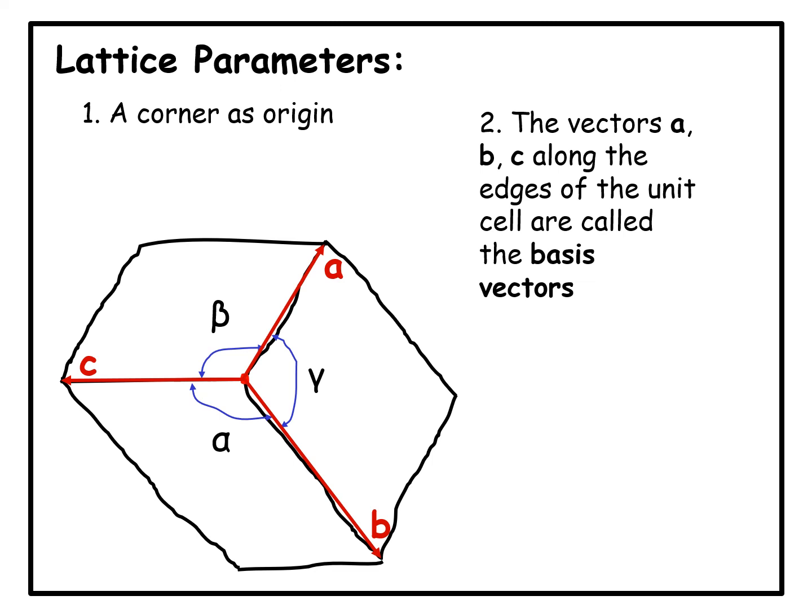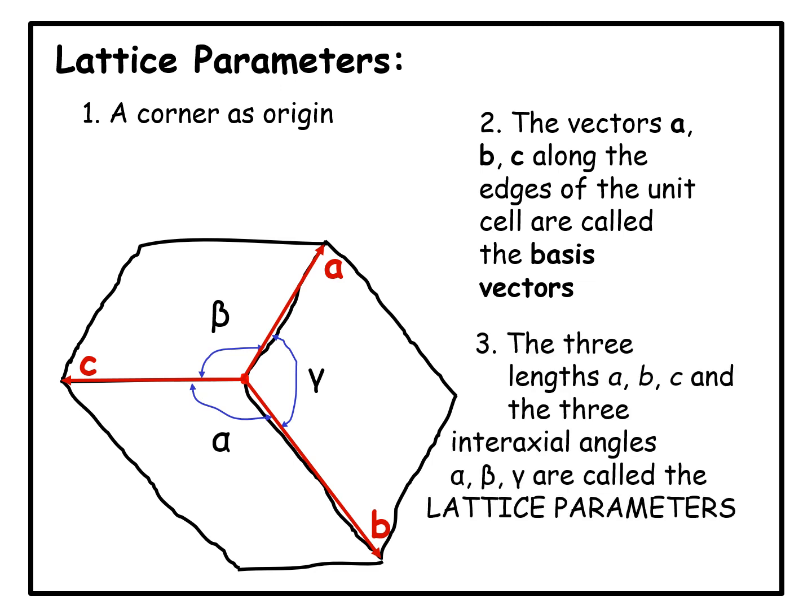The six scalar quantities corresponding to the vectors a, b, and c—the three lengths a, b, and c, and the three interaxial angles alpha, beta, and gamma—are called the lattice parameters.